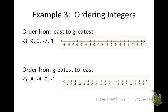Now we're going to start with Example 3, and we're going to order a bunch of integers — put them in order. Copy this down into your notebook and leave plenty of space in between so we can do some calculations. I'm going to underline what I want to do — order from least to greatest. I'm going to put dots on my number line: negative three, positive nine, zero, negative seven, and positive one.